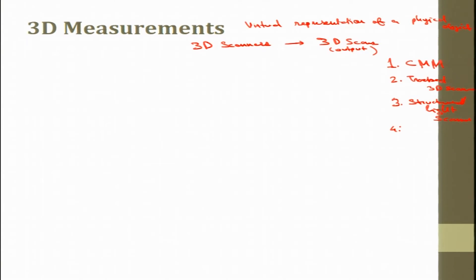One more type of scanner is the portable 3D scanner. A portable 3D scanner can be either a CMM or is meant as a portable CMM scanner — anything that can be held in hand and taken to the machine or component that we would like to measure is called portable. These are the major kinds of scanners. I am just introducing them; for details, we will share the notes and you can read them.